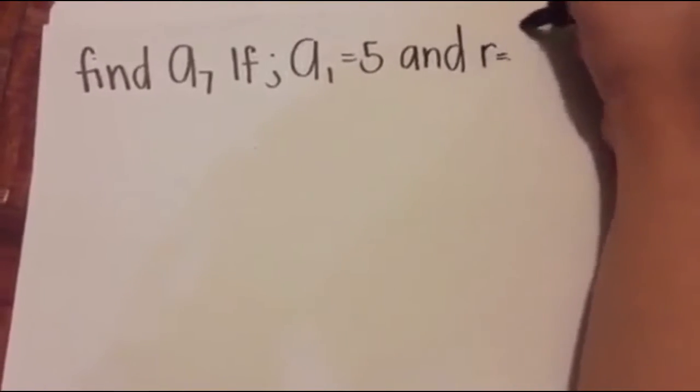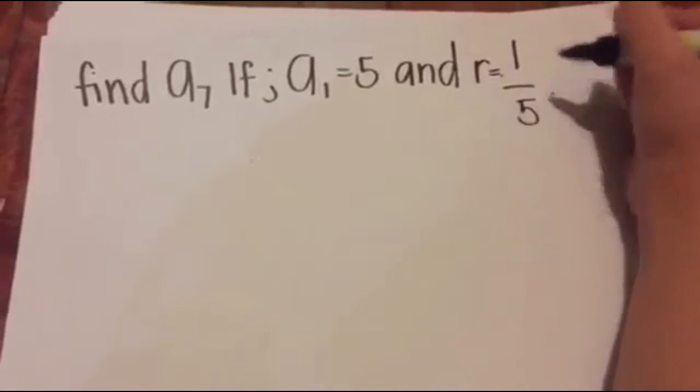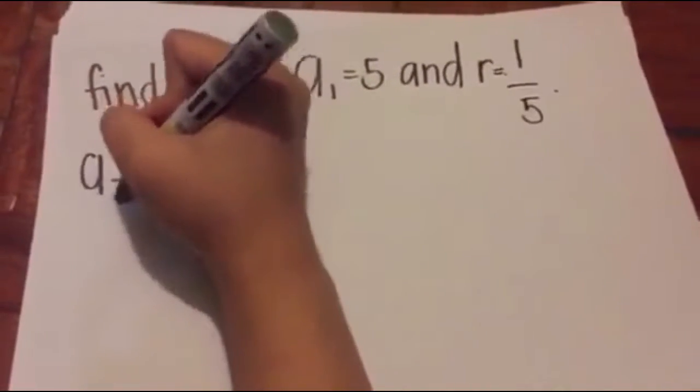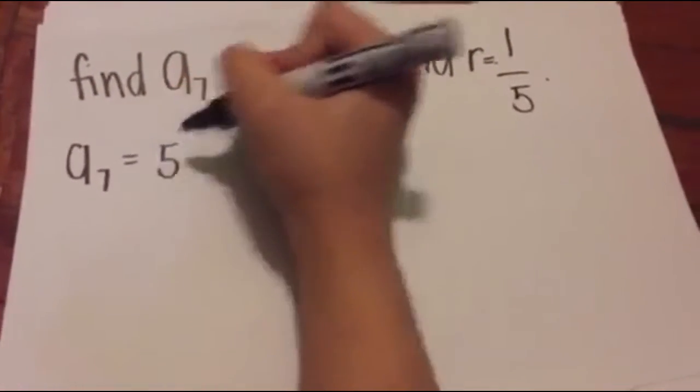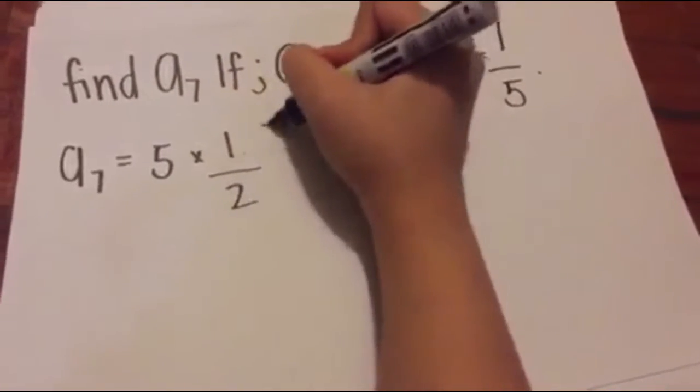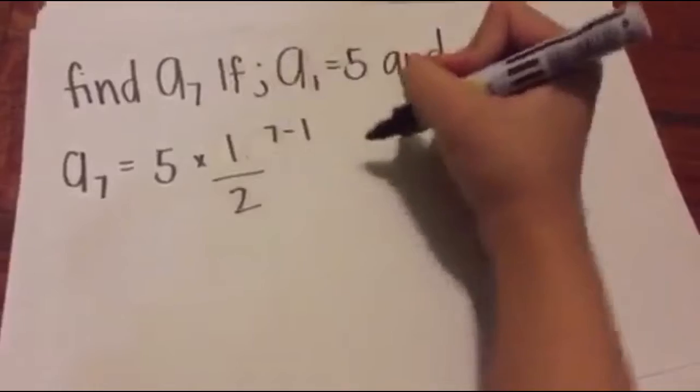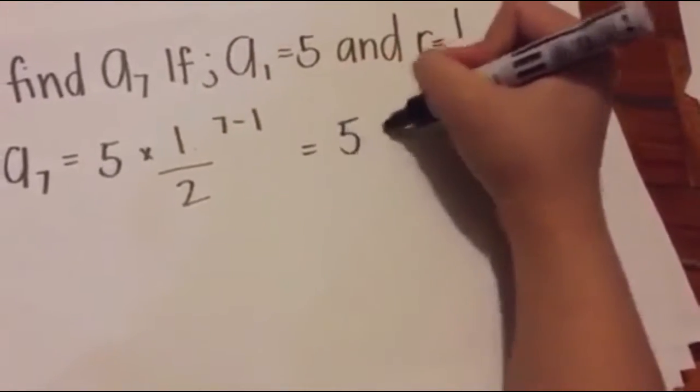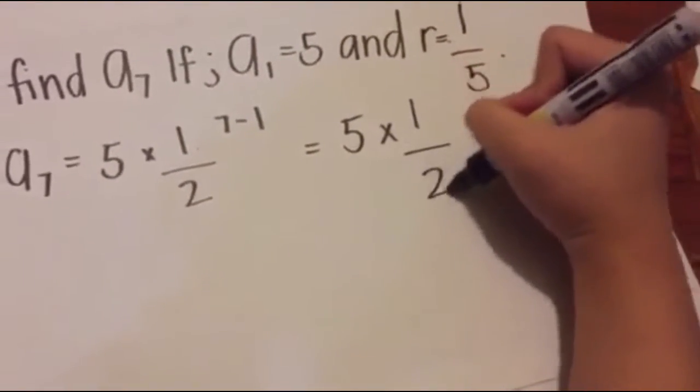Find a7 if a1 equals 5 and r equals 1 over 2. Plug in your given values to your formula and you get a7 equals 5 times 1 over 2 raised to 7 minus 1.